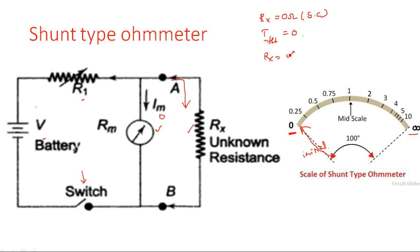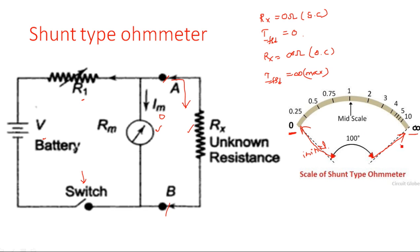Now assume Rx equals infinity ohms — meaning open-circuited. If you open-circuit the terminals A and B, whatever current flows through the circuit must go entirely through the meter itself, because there is no parallel component to divide the current. So IFSD equals maximum current — whatever the maximum current is, it all flows through the meter. That is why the needle goes to the maximum position. So resistance is maximum and current is also maximum. This is the calibration of the shunt type ohmmeter.